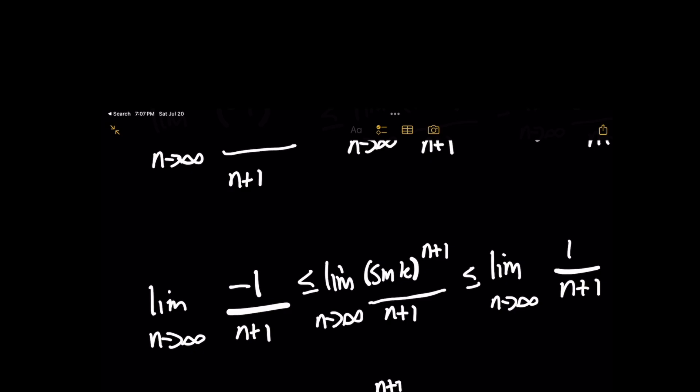When you take the limit as n approaches infinity, it might help to visualize it this way: if the constant is in the numerator, you can rewrite the limit as the constant brought outside, multiplied by the limit where the numerator is 1. On the left-hand side it's the same as negative 1 times the limit as n approaches infinity of 1 over n plus 1.